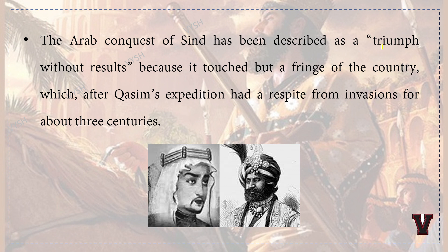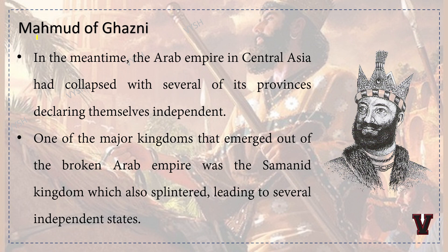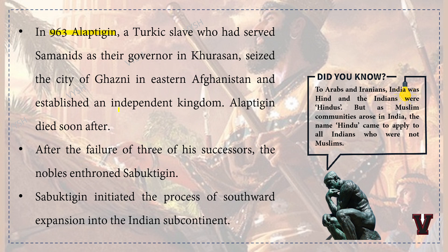The Arab conquest of Sindh has been described as a 'triumph without results' because it touched but the fringe of the country, which after Qasim's expedition had a respite from invasions for about three centuries. Meanwhile, the Arab empire in Central Asia had collapsed, with several provinces declaring themselves independent. One major kingdom that emerged was the Samanid kingdom, which also splintered into several independent states.